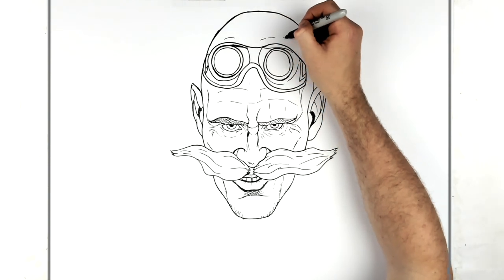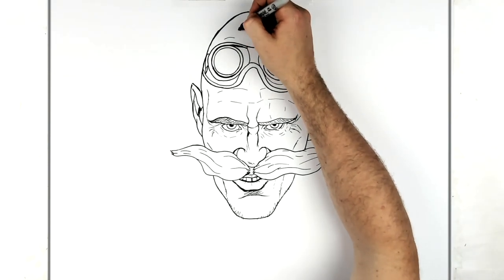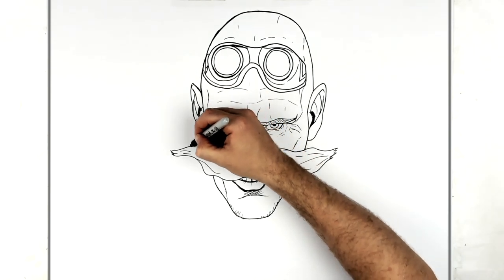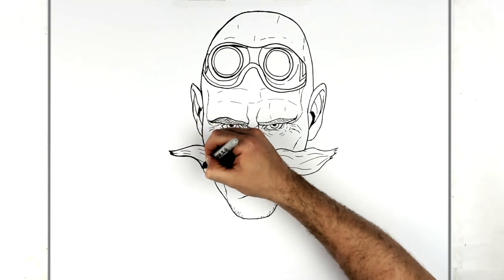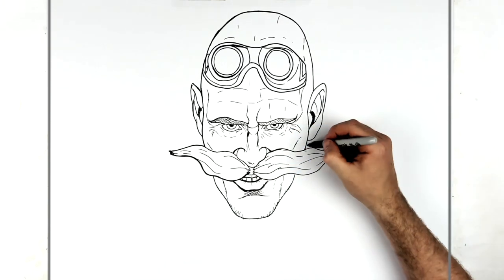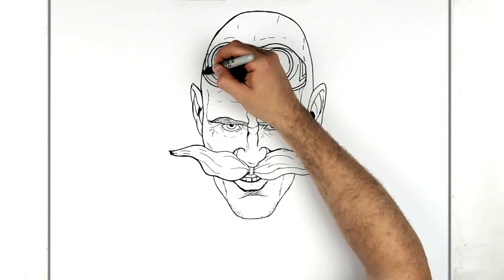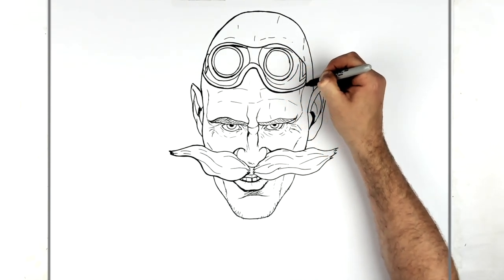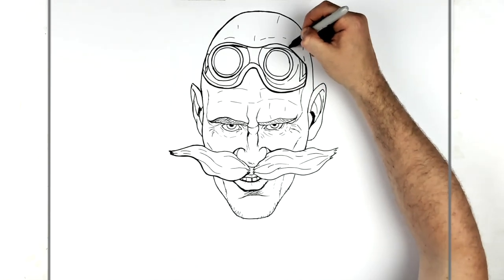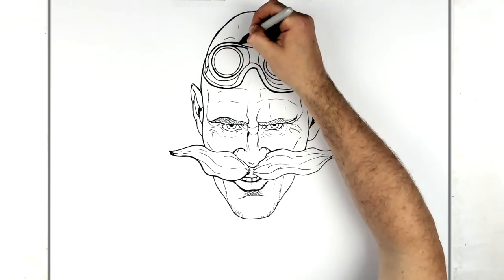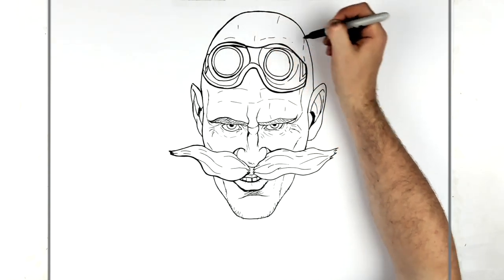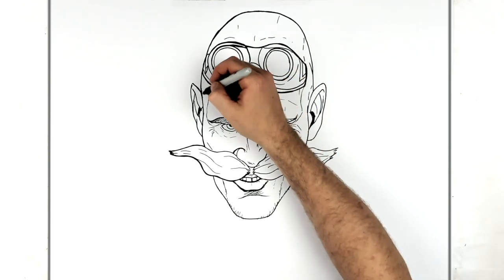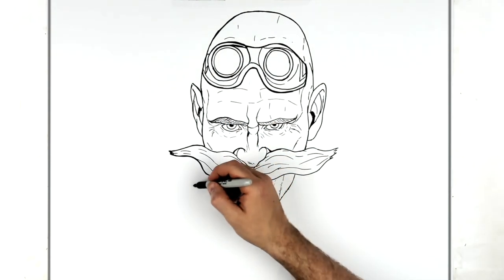Let's tidy up some of these lines and add more wrinkles on his head — a line just for the temple of his head going around. Smooth up some more lines, and thicken up the edge of the goggles a little bit. That's pretty much his face.